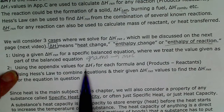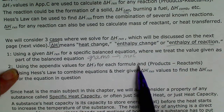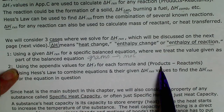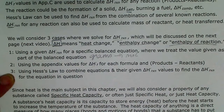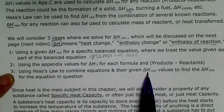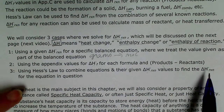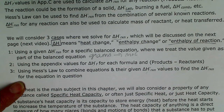We can also solve for delta H using values in the appendix — look up the delta H values for each formula in the equation, multiply by the number of moles in the balanced equation, and take products minus reactants. Hess's Law is like a puzzle where we combine equations that already have delta H values given, rearrange them to get the equation we're interested in, and combine the delta H values accordingly.